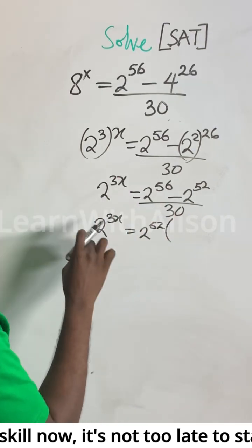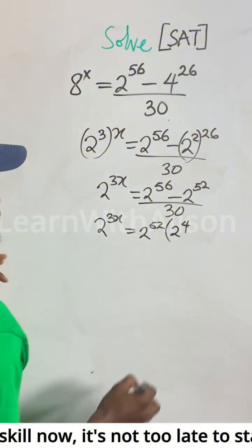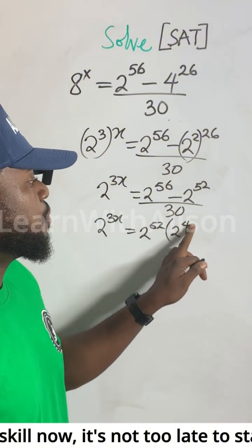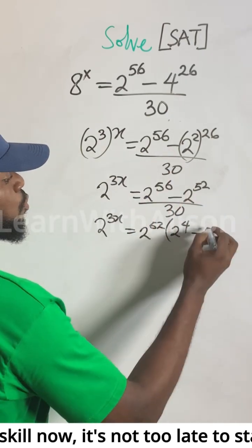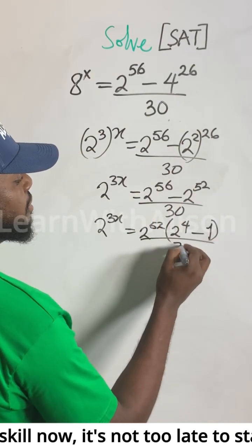If you pull out 2 to the power of 52, what's left is 2 to the power of 4, since 52 plus 4 gives you 56. The bases are common. When you pull out 2 to the power of 52 from the second term, 1 is left, all divided by 30.